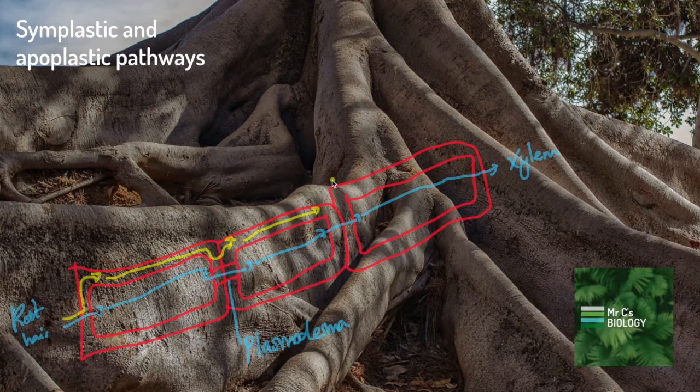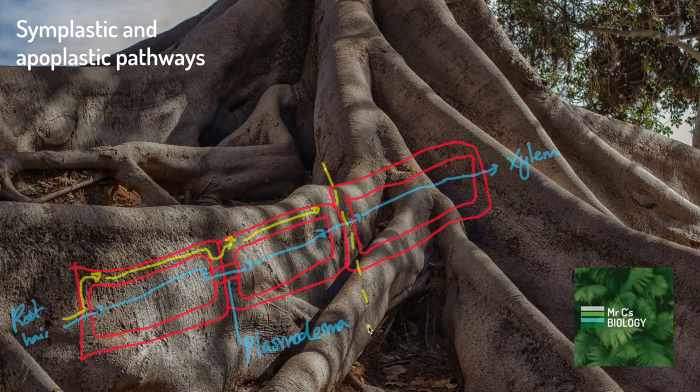However, when it gets very close to the xylem, there's something called the Casparian strip. And that is where the cells change and it can no longer travel in the cell wall. So it switches and goes into the cytoplasm so that it can make its final part of the journey into the xylem.